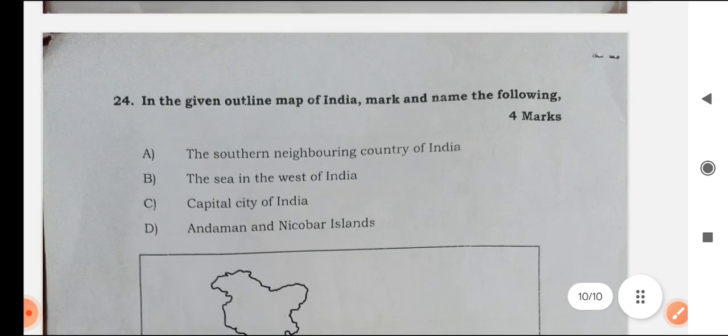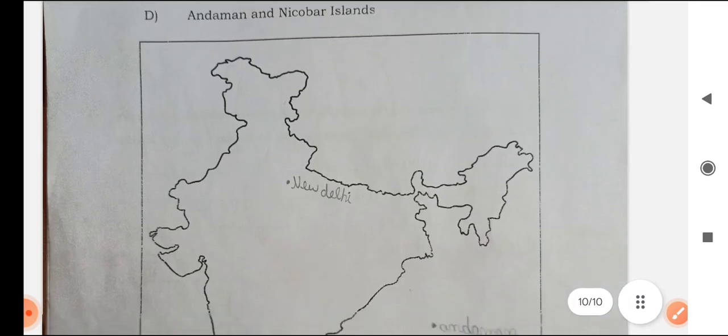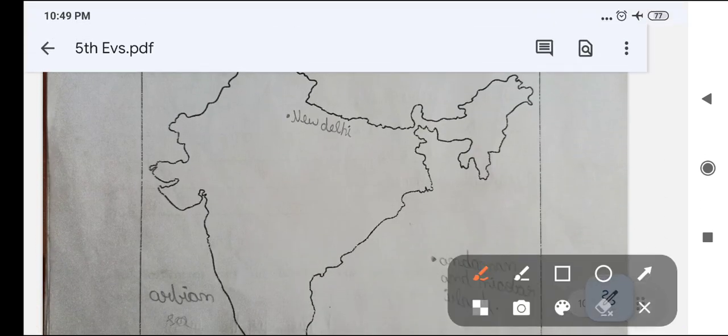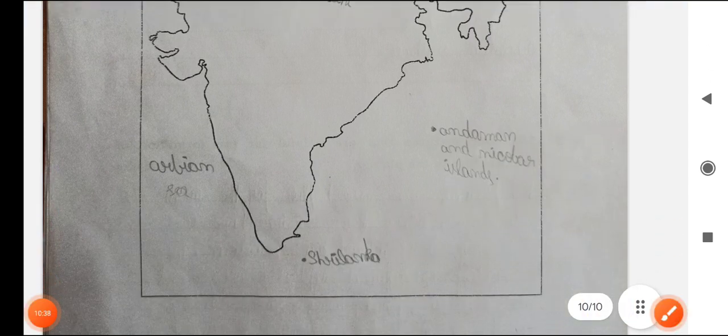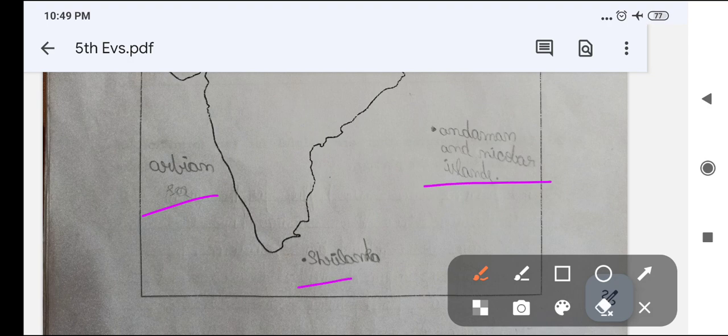In the given outline map of India, mark and name the following. The southern neighboring country of India, the sea in the west of India, capital city of India, Andaman and Nicobar Islands. Here is New Delhi, capital of India and here is Arabian Sea, Andaman and Nicobar, Sri Lanka, northern part.